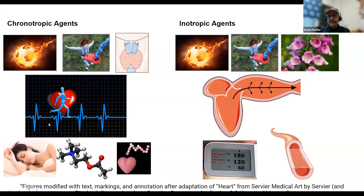Chronotropic agents that slow down heart rate include the parasympathetic nervous system through the vagus nerve, acetylcholine which binds to muscarinic receptors, and beta blockers, which interfere with adrenaline binding to the adrenergic receptors.